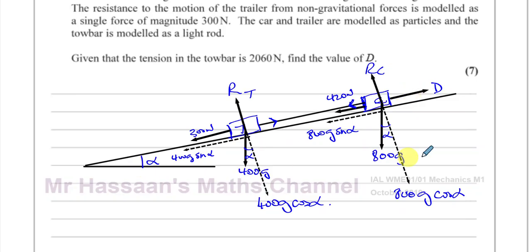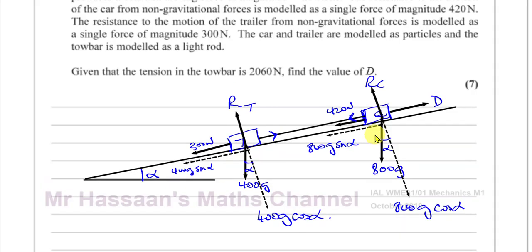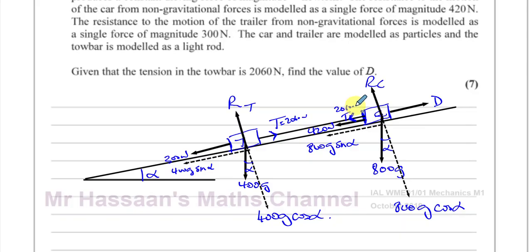Those are all the forces acting on this system. The tension in the tow bar is 2060 Newtons — that's known. So now we need to find the driving force D.